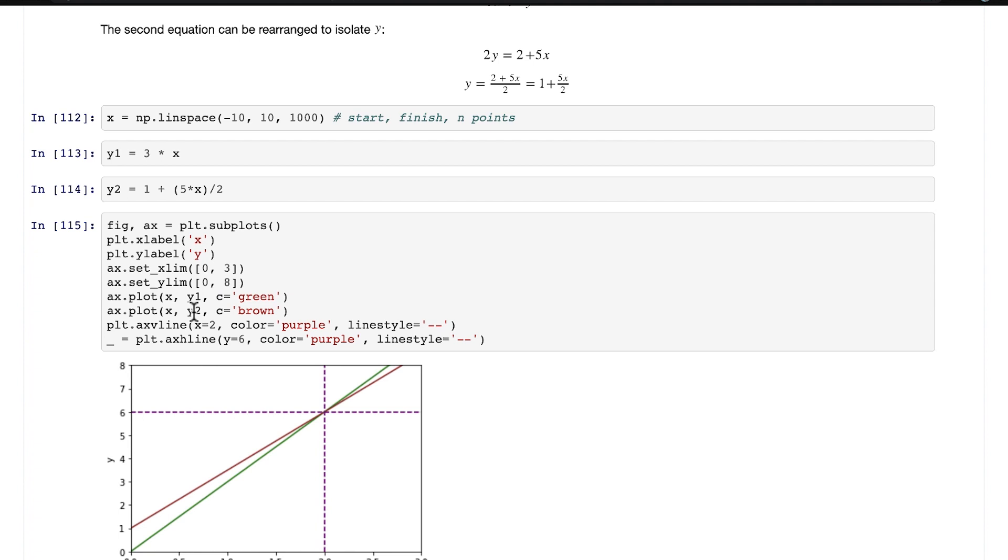And then our second equation with y2, this equation here, is in brown. We can see the brown line has a slightly lower slope than the green line. Even though the brown line has a higher y-intercept of positive 1, eventually the green line catches up to it here.